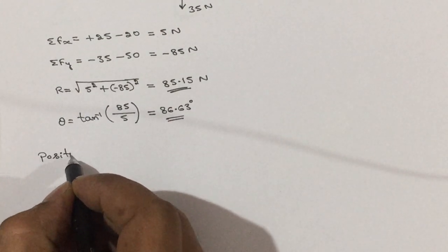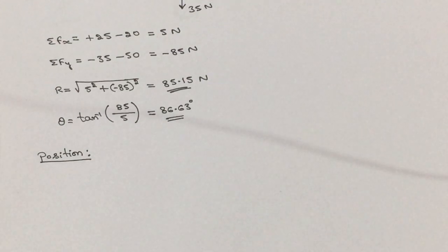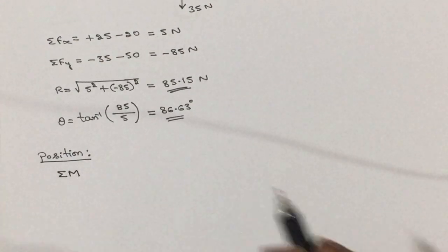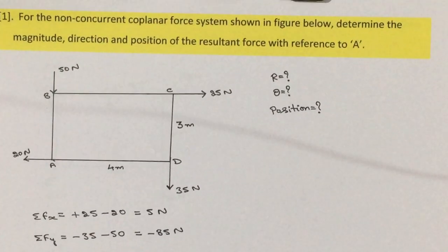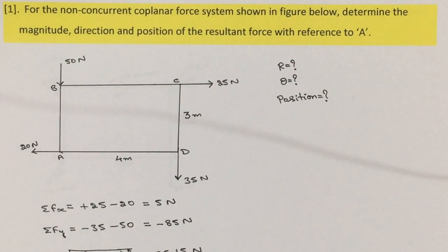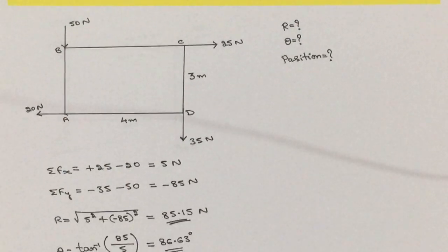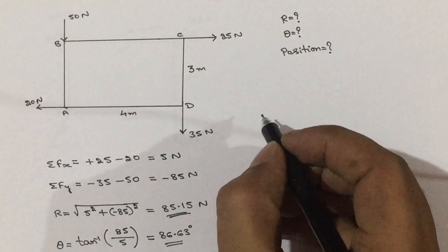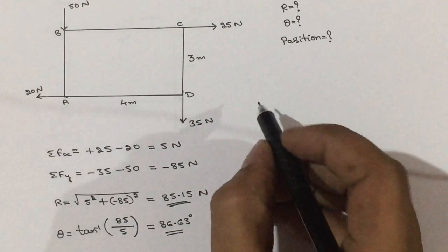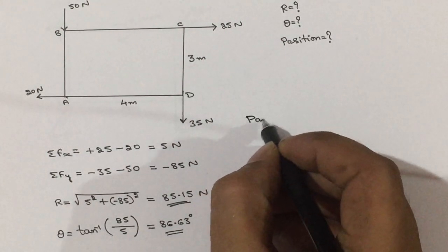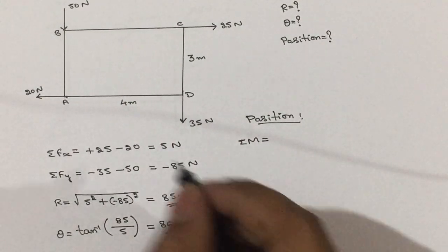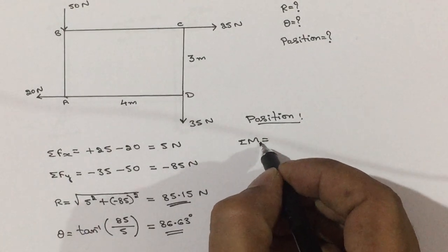To calculate the position, we need to calculate the sum of the moments with respect to the given point — sigma M with respect to point A, as stated in the problem. The position of the resultant force is with reference to point A.